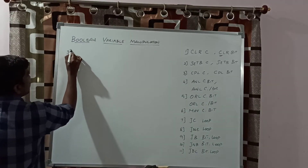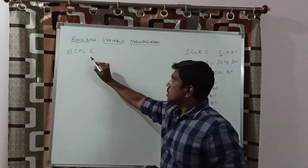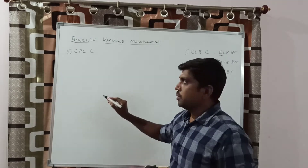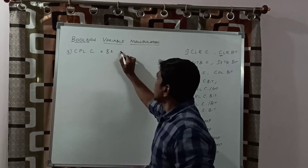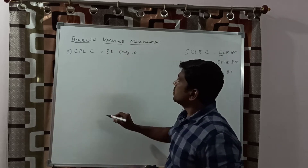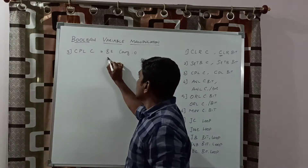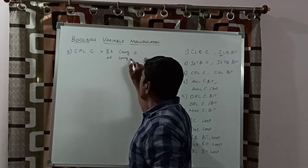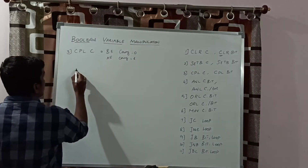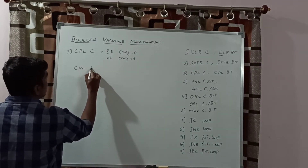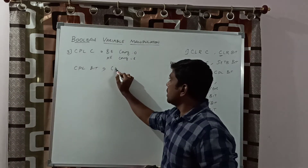The third instruction is CPL C. CPL represents complement of the carry value — taking one's complement of the carry bit. Before execution, the carry value equals 0. After execution of this instruction, the carry bit is inverted. After execution, the carry bit equals 1.